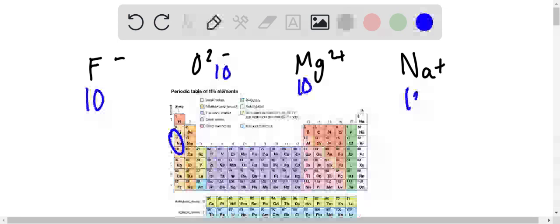They all have 10 electrons. Since we have the same number of electrons and the same electronic configuration, you might be wondering how do we arrange these in decreasing radius? Well, there is one thing that is different about these ions, and that is the nuclear charge.